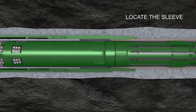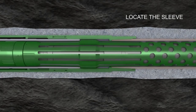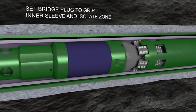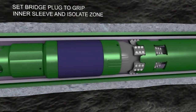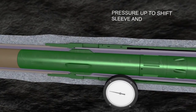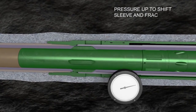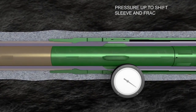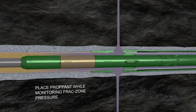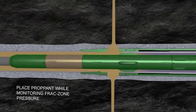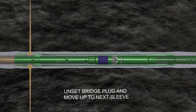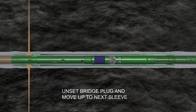First, we locate the sleeve, then we set the bridge plug. When we set the bridge plug, bump pressure shifts the inner barrel down to open the frack ports. The formation breaks down and proppant is pumped into the fracture. Then we unset the bridge plug and move to the next sleeve.